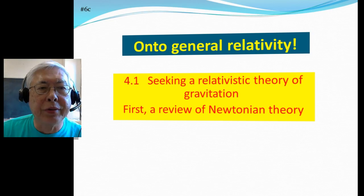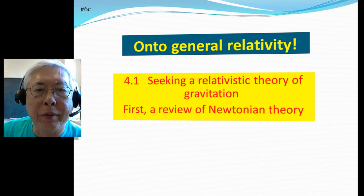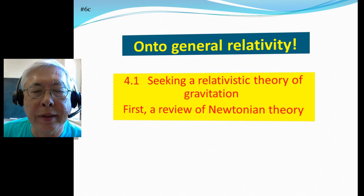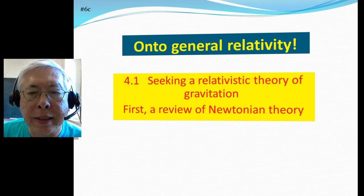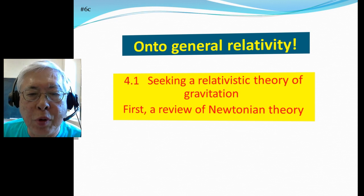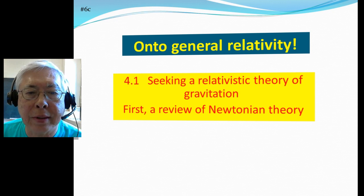Okay, we are coming to the third part of this lecture six. So we are really on to general relativity. Actually start chapter four, really the first section. And I was seeking a relative theory of gravitation. Before we do that, we could review the Newtonian theory. So in what sense we'll see how we can obtain the relative theory from Newtonian theory.